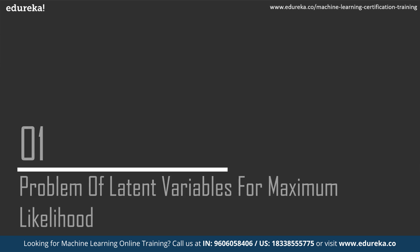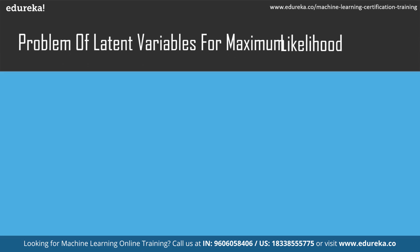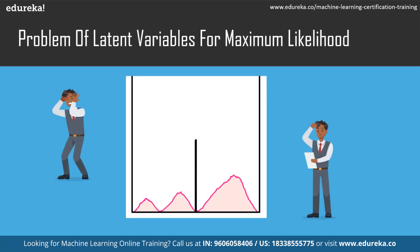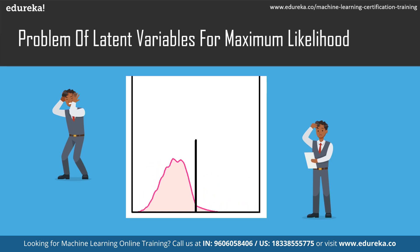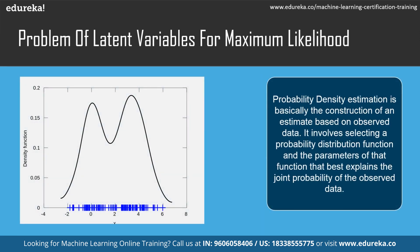Let's understand the problem with latent variables for maximum likelihood. In statistical modeling, a common problem is how to estimate the joint probability distribution for a dataset. Probability density estimation is the construction of an estimate based on observed data. It involves selecting a probability distribution function and the parameters of that function that best explains the joint probability of the observed data.